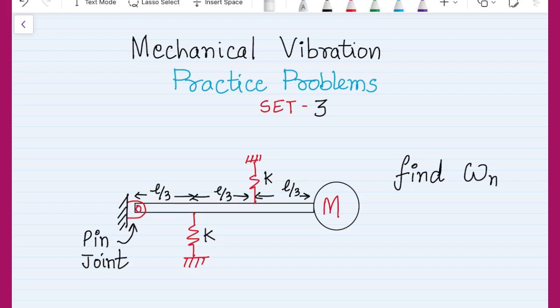In this session we will try to find the natural frequency of the system. If you closely observe the system, this is a pin joint. We have already discussed in our previous video that when we have a member with a pin joint and a mass attached, the member is not acting like a beam because there is no bending resistance. The member is massless, connected with a pin joint, and we have a mass connected at the end. There are two springs, both connected at equal intervals of l/3.